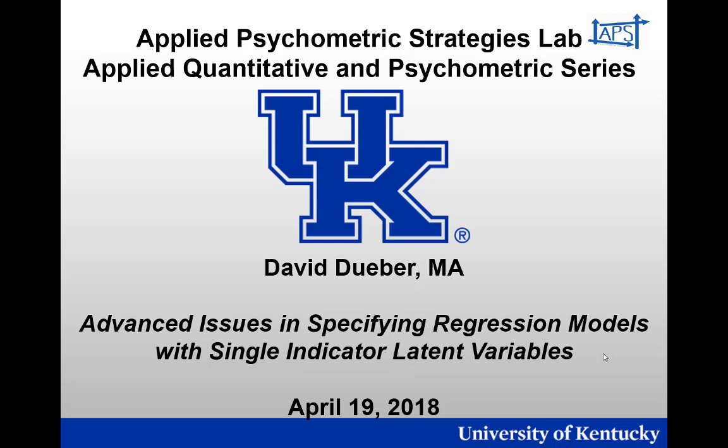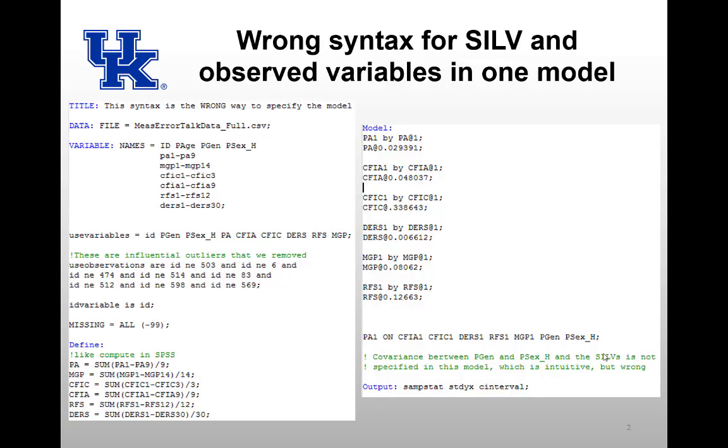You should go watch that video before you watch this one because the models that we're using in this video are the same as the models used in that video. So the context is we have a regression analysis in which there is measurement error in the predictors and in the outcome. We're correcting for those using single indicator latent variables.